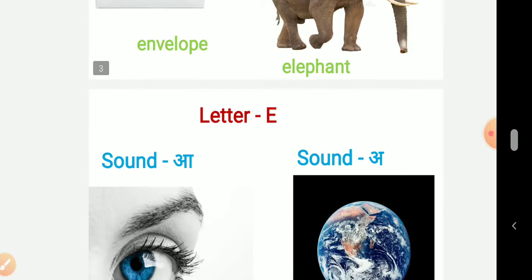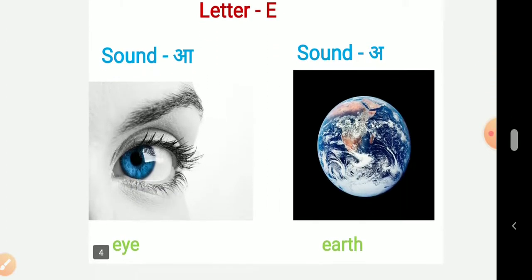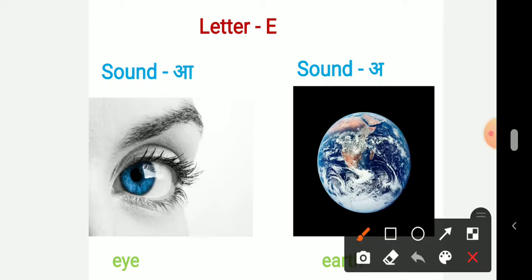Now here another two sounds are there. Those are A and O. So here sound A, that is I. A, I, E-Y-E, I.